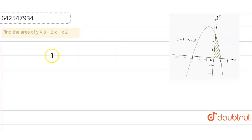We have to find the area of the given equation which is y equals 3 minus 2x minus x squared. So let's start with the question. We have given this y equals 3 minus 2x minus x squared.